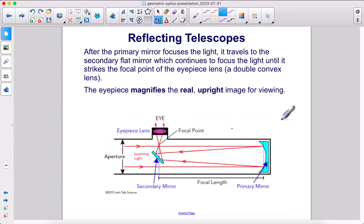After the primary mirror focuses the light, it travels to the secondary flat mirror, which continues to focus the light until it strikes a focal point of the eyepiece lens, which is a double convex lens. The eyepiece magnifies the real, upright image for viewing.